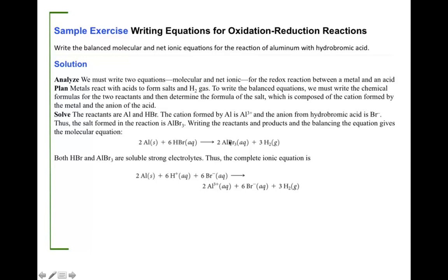Plus 3H₂. From here we can see that we have a spectator ion, which will be the bromine. So we cancel the bromine on both sides.